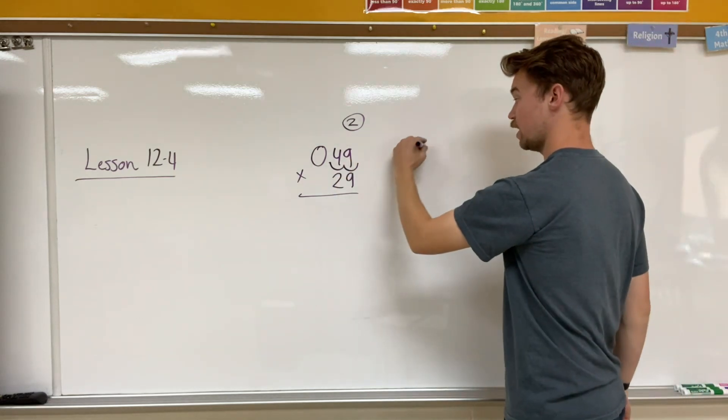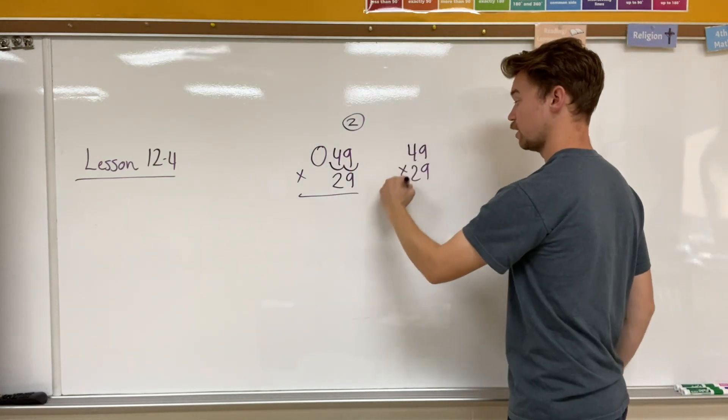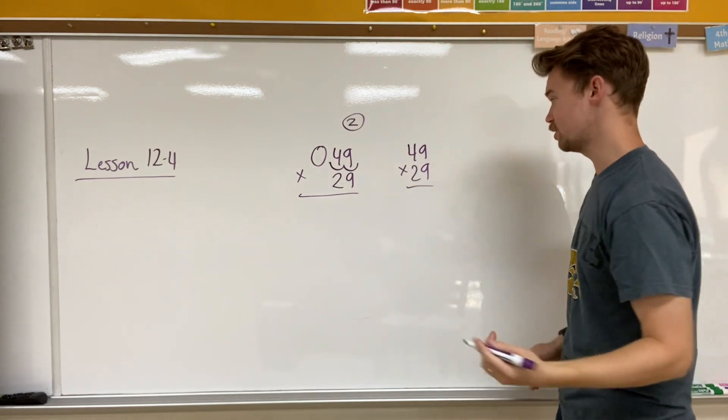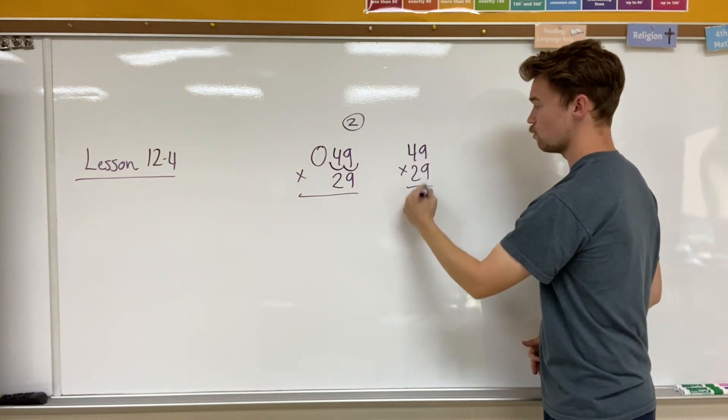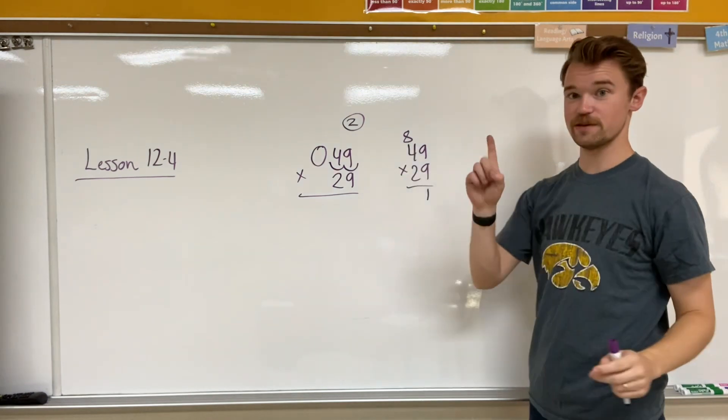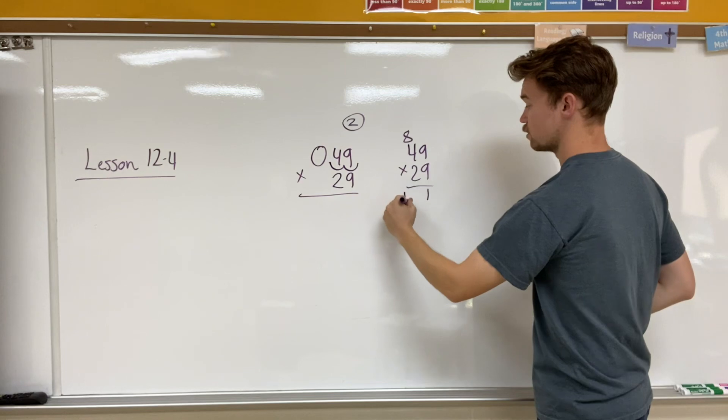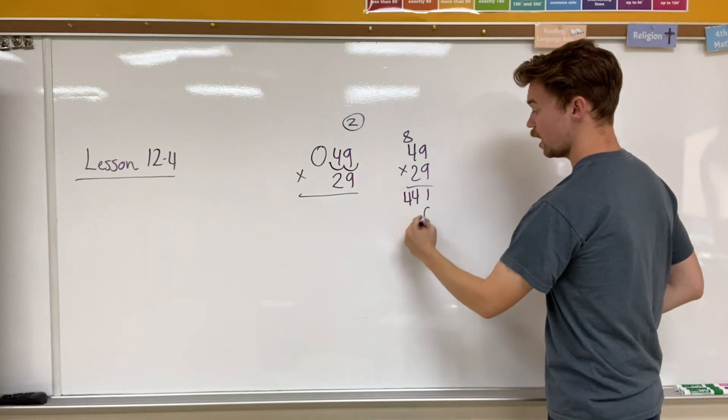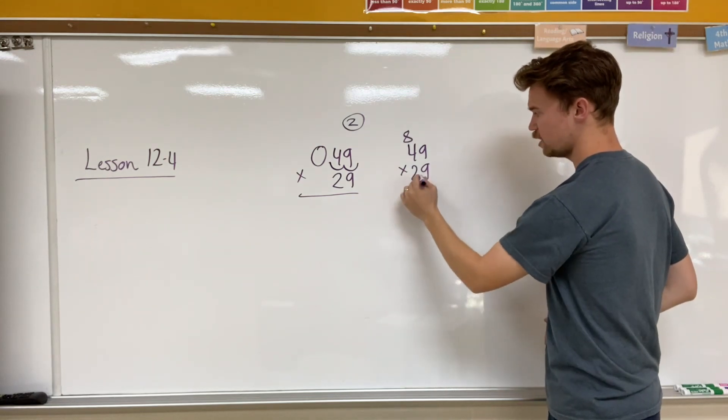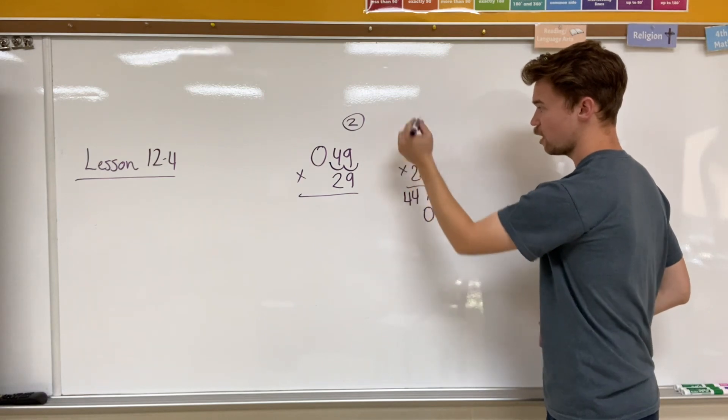Now I have 49 essentially times 29. We know how to do double digit multiplication. 9 times 9 is 81. And 9 times 4 is 36, 37, 38, 39, 40, 41, 42, 43, 44. So I have 44 right here. I'm going to add a 0 for having nothing left to give for 9 and cross that out as well.